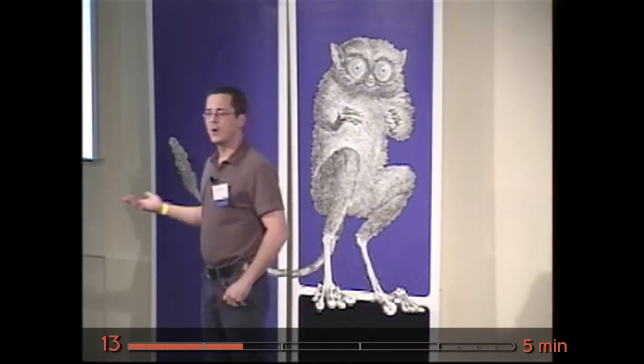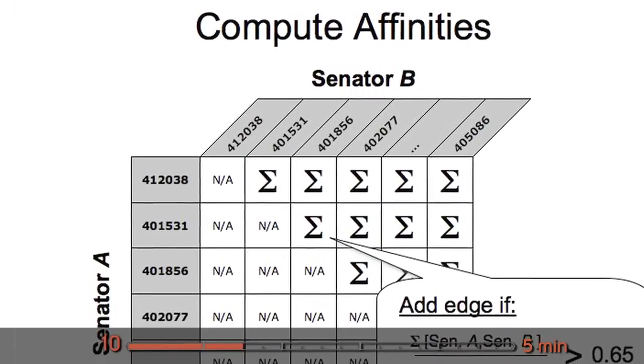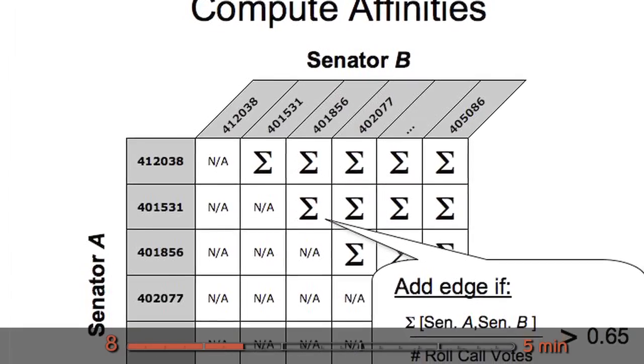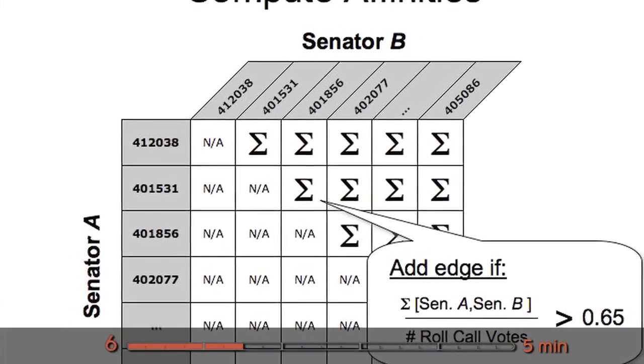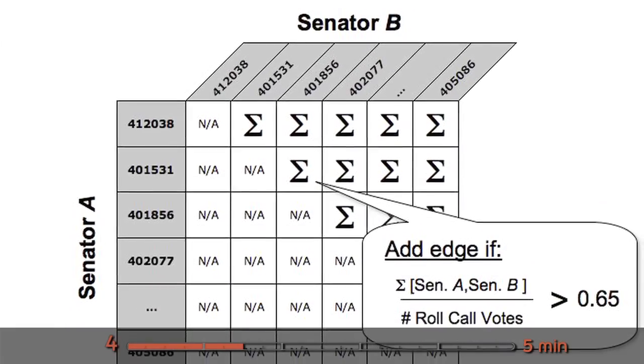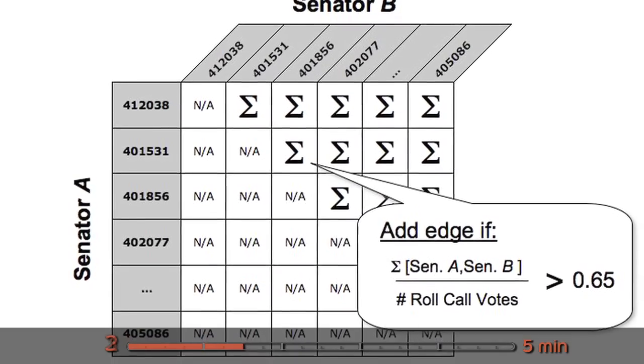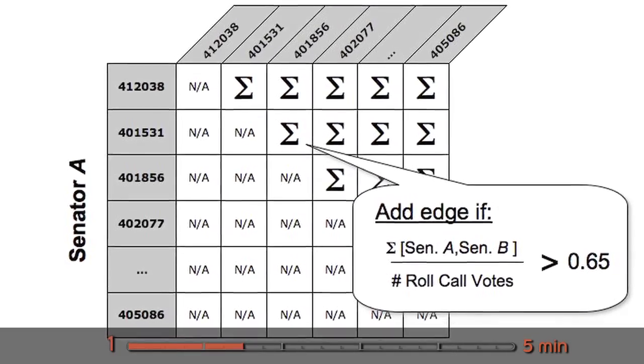But then that's not quite enough. You have to then begin to calculate the affinities between when senators vote together. So what you do is you say, how many times did Senator A vote with Senator B? You go through each of these files and you just count them up and get a total. Then you divide it by the number of sessions and that gives you your edges.